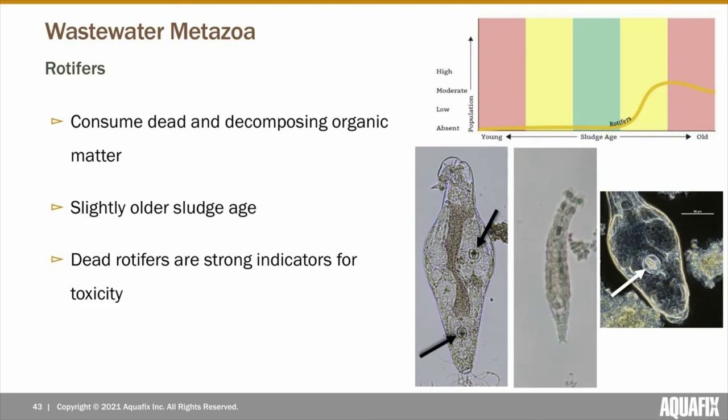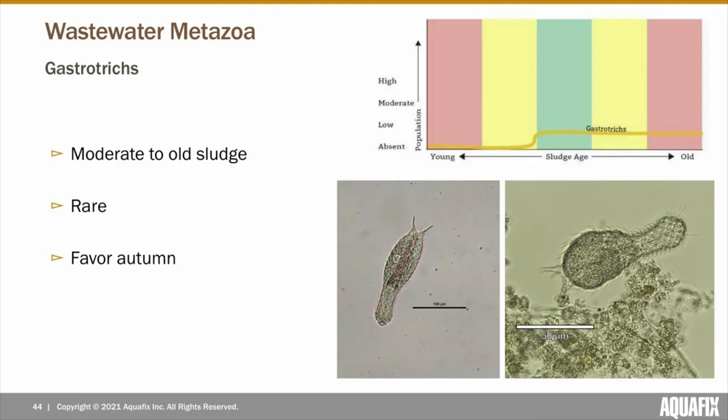If live rotifers are observed in your plant, they're indicative of a slightly older sludge age. However, if dead rotifers are present, they're indicators of toxic conditions, as they are usually the first to be affected. Gastrotrichs are also indicative of a moderate to older sludge age. They're not common, so not a lot is known about them, but we tend to see them a little more frequently in the autumn, though we're not exactly sure why.